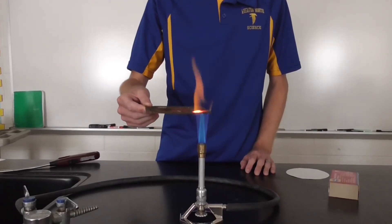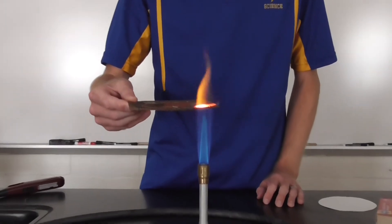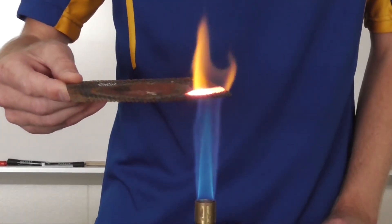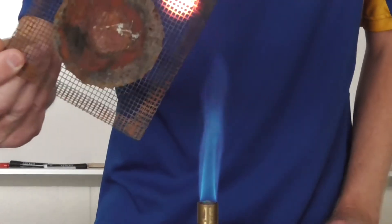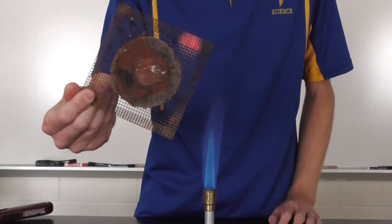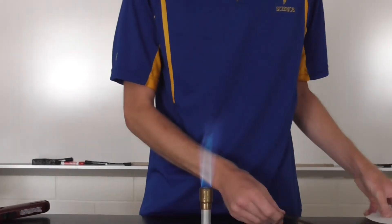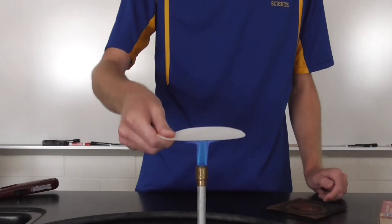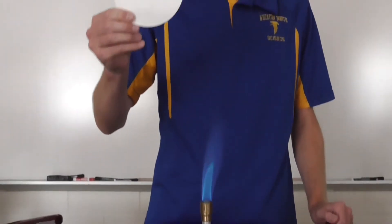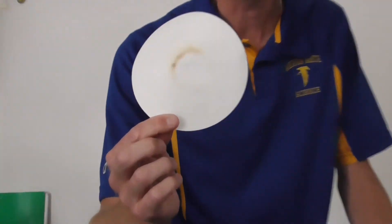The hottest part is at the top of the inner cone. You'll notice when we put the wire mesh there, we achieve a uniform red spot. It can also be demonstrated by burning some filter paper. You can see a little bit that there's a ring that's produced.